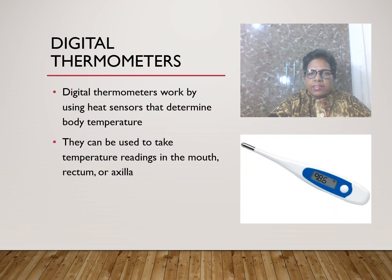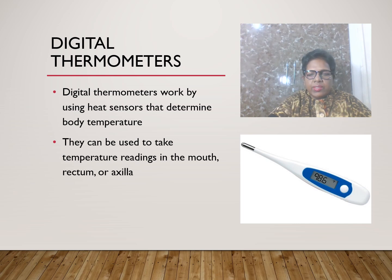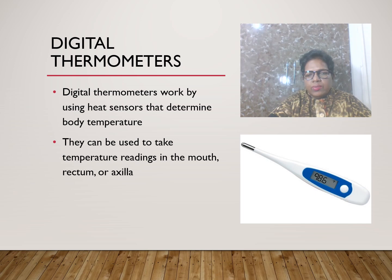Digital thermometers work by using heat sensors that determine body temperature. They can be used to take temperature readings in the mouth, rectum, and axilla. These three places can all be used with digital thermometers.